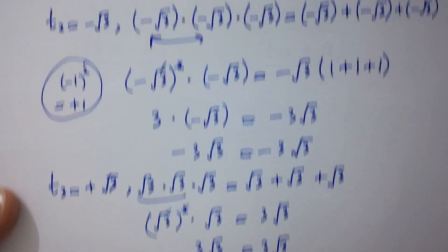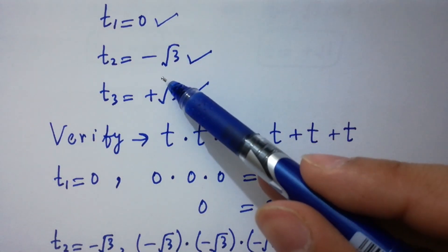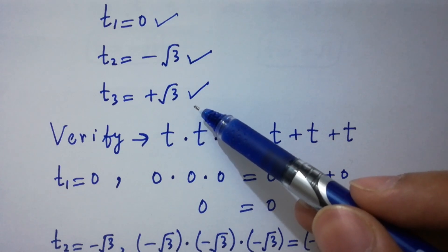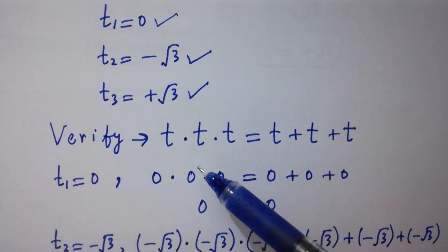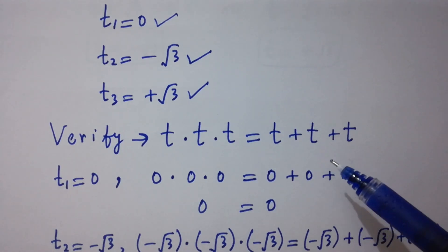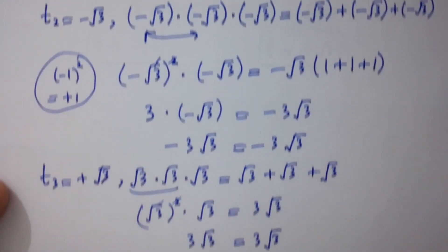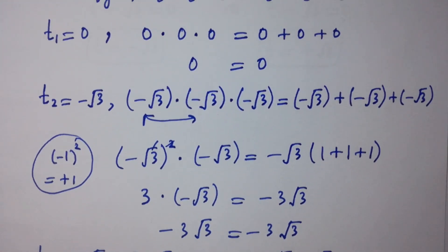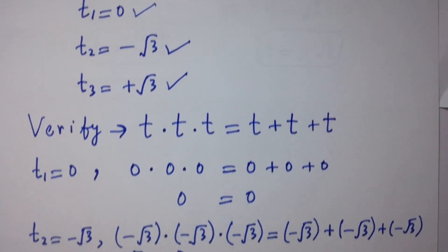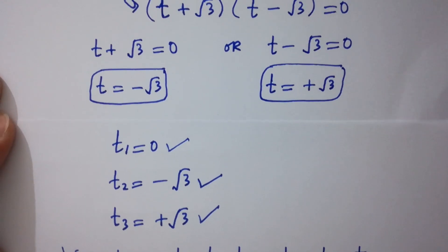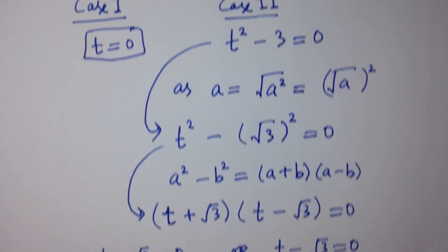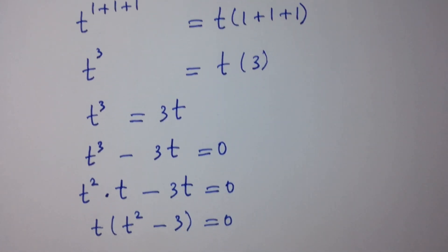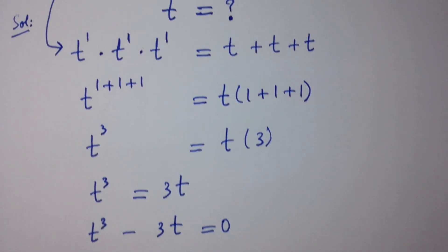This shows that t1 equal to 0, t2 equal to minus square root of 3, and t3 equal to square root of 3 all satisfy the equation t times t times t equal to t plus t plus t. Thanks for watching this video. Please subscribe to this channel to get notifications of new videos, and don't forget to share these videos with your classmates and friends. You can also visit the playlist of this channel to learn more.